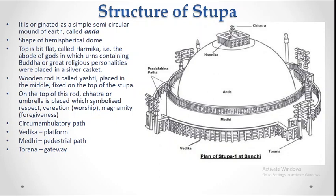The hemispherical mound is called the Anda. On top of the Anda is a structure called the Harmika. Inside the Stupa, there is a casket — a silver casket — which contains Buddha's ashes (asthia), or the ashes and religious objects of other important religious personalities. The Harmika is considered the abode of God.